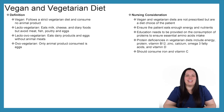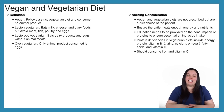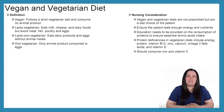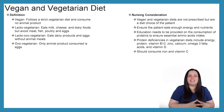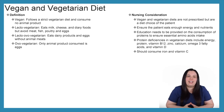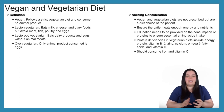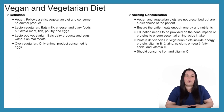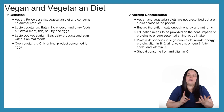The last diet we'll discuss is the vegan and vegetarian diet. Vegans follow a very strict diet consuming no animal products. Lacto-vegetarians eat milk, cheese, and dairy foods but avoid meat, fish, poultry, and eggs. Lacto-ovo vegetarians eat dairy products and eggs but avoid meat, fish, and poultry.